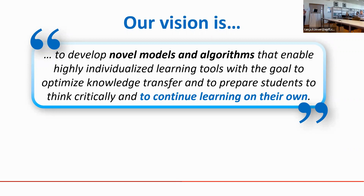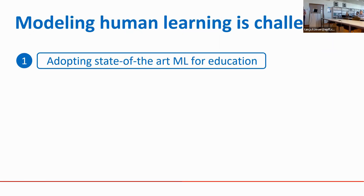Our vision is to develop models and algorithms that enable highly individualized learning tools, with the goal not only to optimize content transfer but especially to prepare students to learn on their own. Tackling this vision requires research on the machine learning side — to represent student knowledge and behavior in our systems — and on the education and learning sciences side, to investigate how we can assess and teach skills important for future learning.